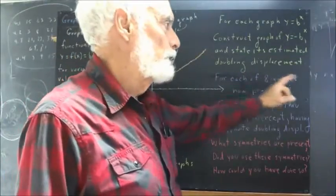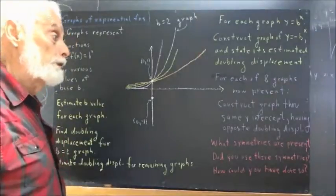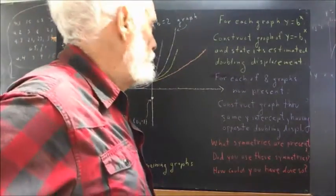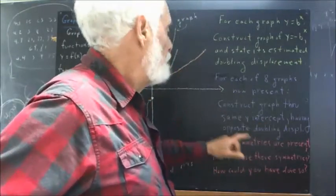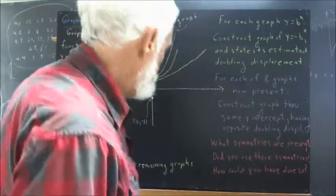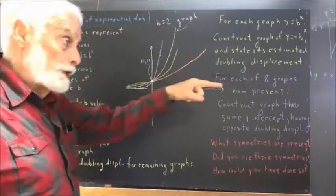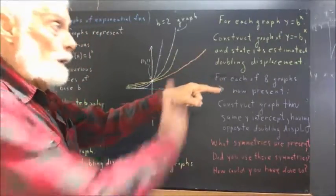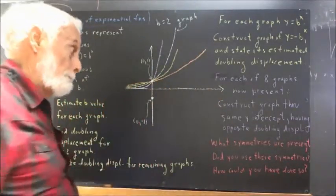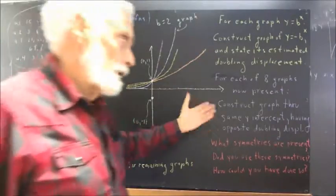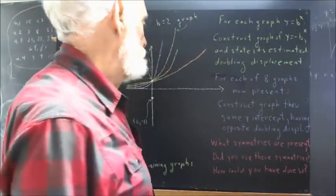Then, for each of the eight graphs now present, because now you will have constructed four new graphs, I want you to construct a graph through the same y-intercept, but having the opposite doubling displacement. That is, if the doubling displacement of the graph you are currently looking at, one of the eight, is in this direction, then the opposite doubling displacement is in this direction. It's just as big, but it goes the opposite way. We've seen how that works.